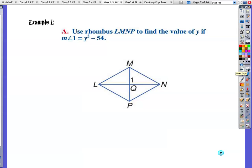Use rhombus LMNP to find the value of Y if the measure of angle 1 is Y² - 54. So once again, this is a rhombus. And one of the special things about a rhombus is this is going to be a right angle. And these are bisected. Opposite sides would be actually congruent. But let's go back to angle 1 is 90 degrees. So if that's 90, then Y² - 54 is going to be equal to 90. So if you're having a little heart connection right now, you see a Y². Let's actually try to get our Y² by itself first.